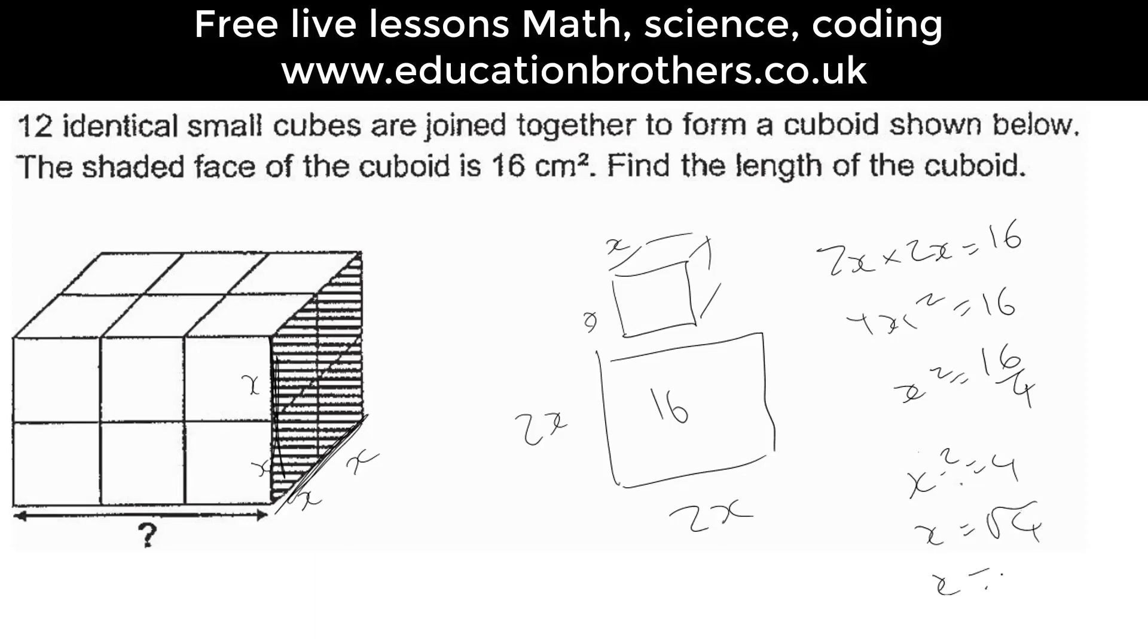x is 2. Find the length of the cuboid. We've got 1, 2, 3 lots of 2s, so we have 2 times 3 which is 6.